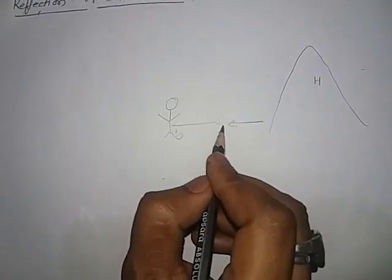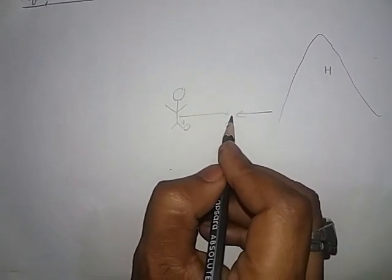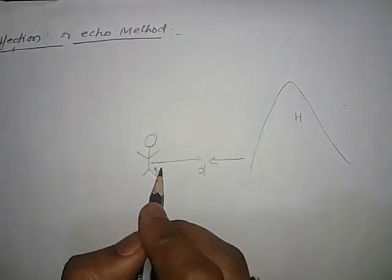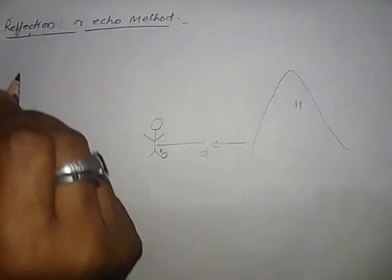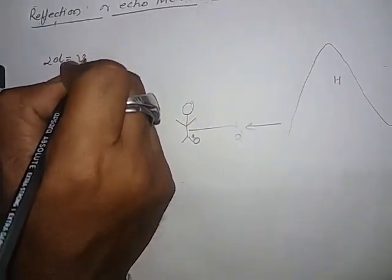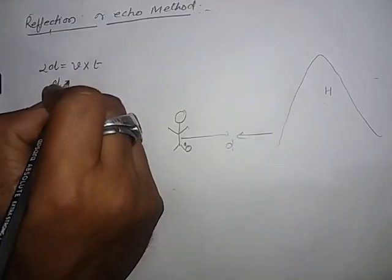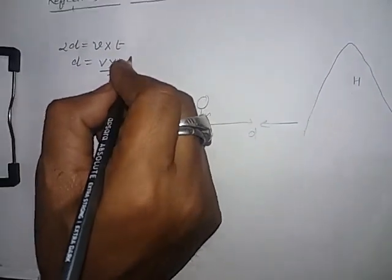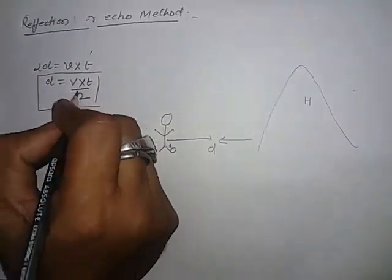It means that in time t sound has covered the distance 2d. If v is the velocity of the sound then 2d equal to v into t that is d equal to v into t by 2.